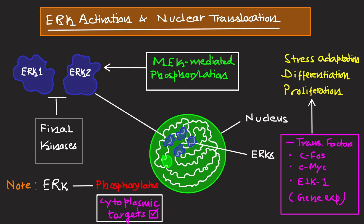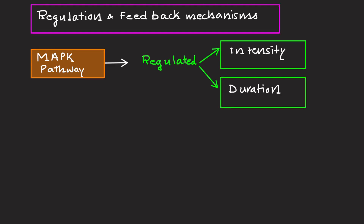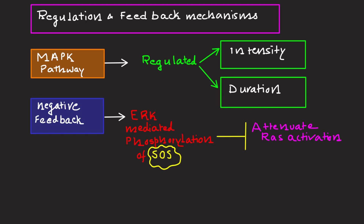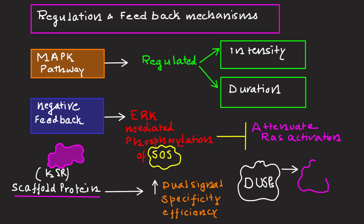Let's understand regulation and feedback mechanisms. The MAP kinase pathway is tightly regulated to ensure proper signal intensity and duration. A negative feedback loop — such as ERK-mediated phosphorylation of SOS — can attenuate RAS activation. Scaffold proteins like KSR help organize pathway components to enhance signaling specificity and efficiency. Dual-specificity phosphatases, also known as DUSPs, dephosphorylate ERK, serving as another layer of control to terminate the signal.